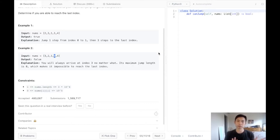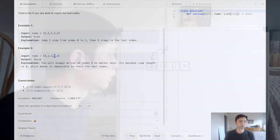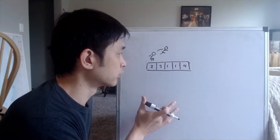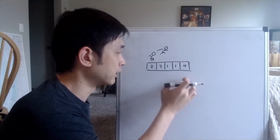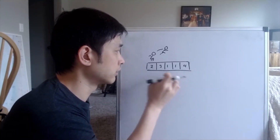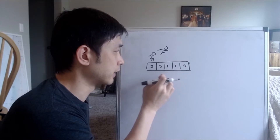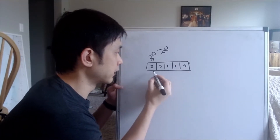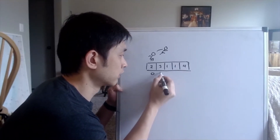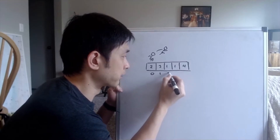There are a lot of approaches to this problem, so I'm going to go to the whiteboard to explain some of them. Here's my jump man diagram, and this is the array that he wants to jump. At each point, it's going to indicate how far he can jump from that index. Let's first indicate the index numbers down here.